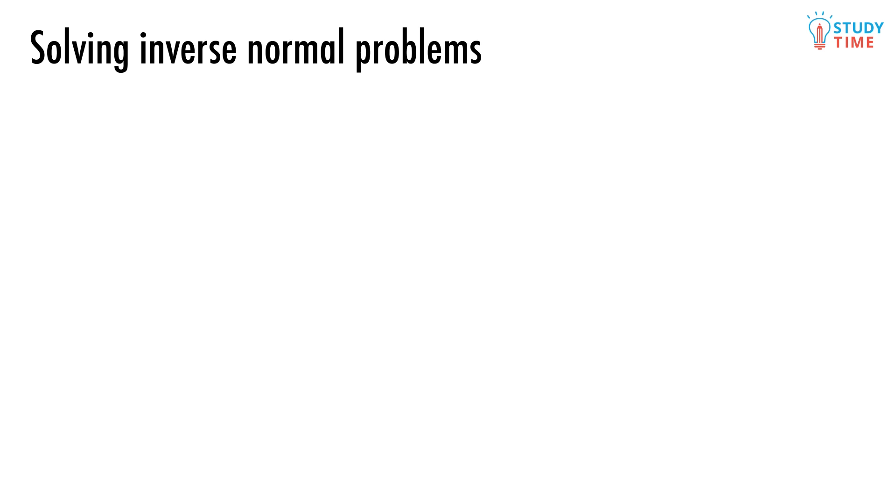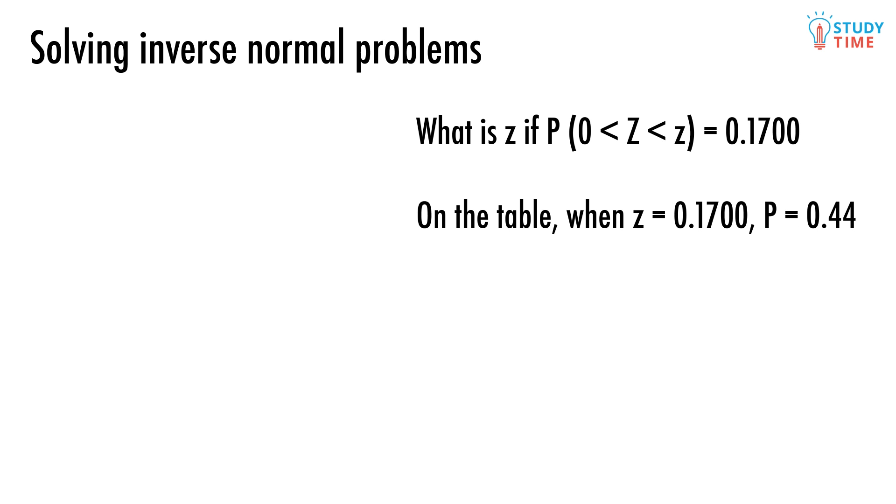Here's an example of one of these inverse normal problems. So what this question is asking us is, what must the number z be if the area between 0 in the middle of the table and this number z is exactly 0.17. If we draw up a quick sketch of this situation, we can figure out that z will be around about here.